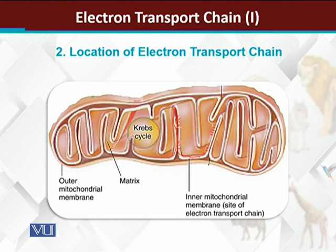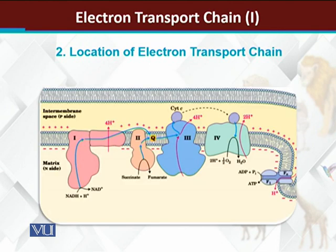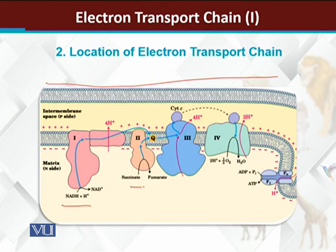If I draw it on the inner mitochondrial membrane, on the left of the Electron Transport Chain, the complexes will be found, and each complex will be independently located. This is the location of the inner mitochondrial membrane. There are a lot of electron transport chains found there. This diagram is elaborated showing the outer mitochondrial membrane and the inner mitochondrial membrane, with particles representing the Electron Transport Chain.